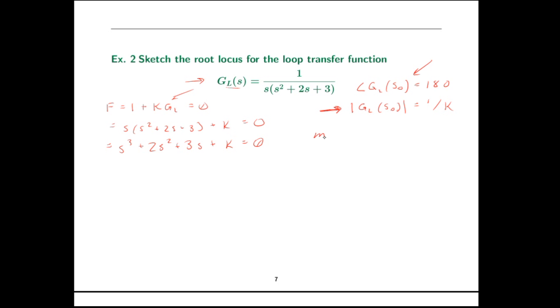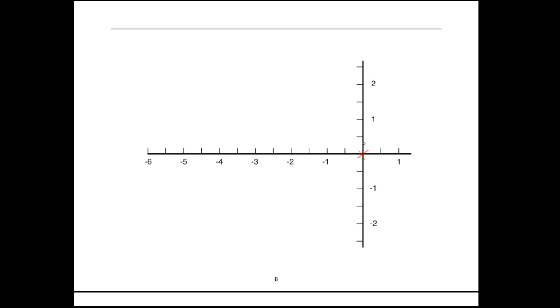So what do we have here? We have m, the number of zeros of the loop transfer function, is 0. And n, the number of poles of the loop transfer function, is 3. So why don't I go ahead and calculate what those roots are. One of them is easy, that one's at the origin. This one, s squared plus 2s plus 3 equals 0. I can use my quadratic formula for that. And what do I get? Negative 1 plus or minus the square root of 2j. So I'll just call that 1.4j. Since it is a sketch, it's somewhat approximate. And let's go ahead and put all this onto a set of axes and see what it looks like.